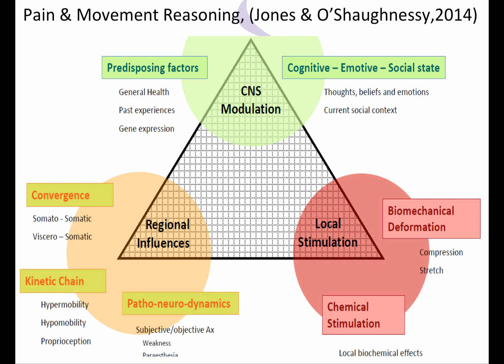Coming down to the right-hand side at the bottom of the triangle we have local stimulation. That would be the person that has had a heavy blow to the front of the knee, fallen heavily onto their patella. It can also be in patellofemoral pain where there's prolonged patellofemoral malalignment — you can get compression and stretch of the parapatellar soft tissues, and particularly in the patella fat pad we often see inflammation which will create a chemical stimulation. So that is local stimulation, local to the patellofemoral joint.